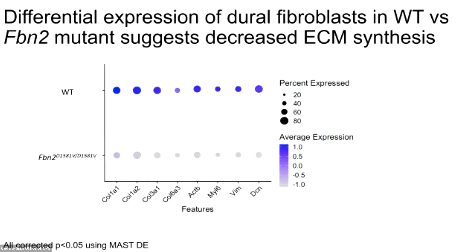When we pull out only the dural fibroblasts, we can conduct differential expression analysis to see signaling differences between fibrillin 2 mutants and wild types in that cell type alone. In this graph, larger circles mean more dural fibroblasts express a given gene, and darker circles indicate higher expression. We can see that the fibrillin 2 mutant has decreased expression of key extracellular matrix proteins, such as two fibrillar collagens — collagen 1 and collagen 3 — among other proteins. It's possible that protein turnover differences prevented us from appreciating these differences by microscopy, so we'll undertake biochemical assays using the entire spinal dura to validate this.